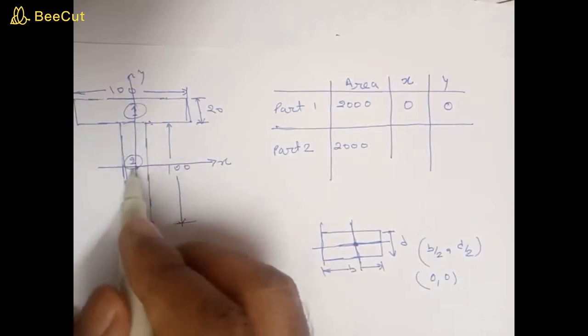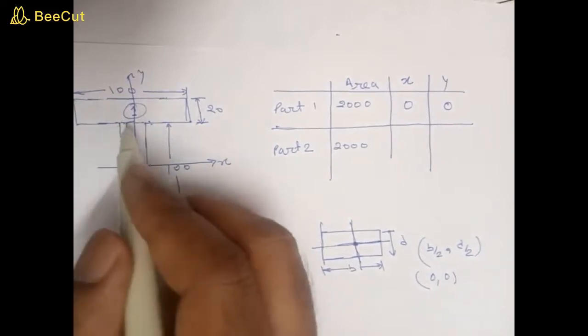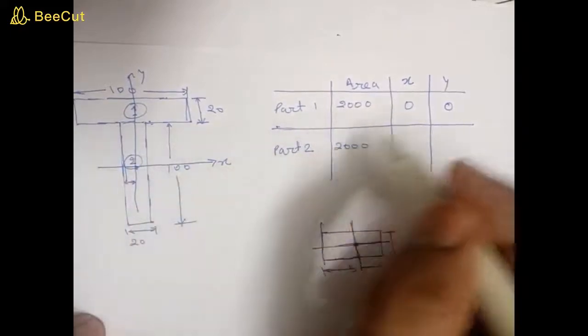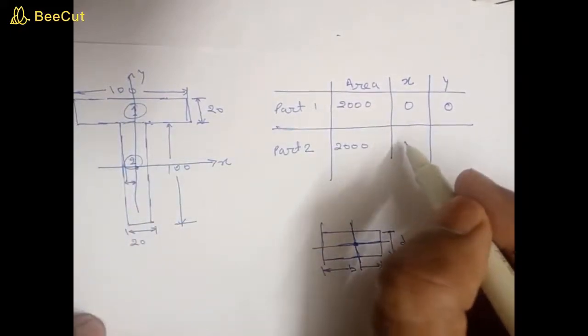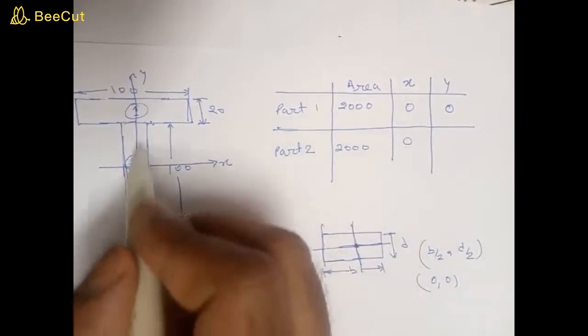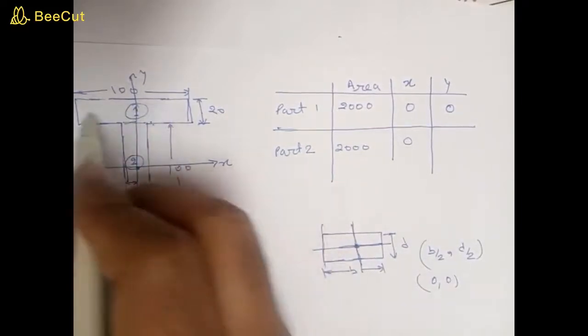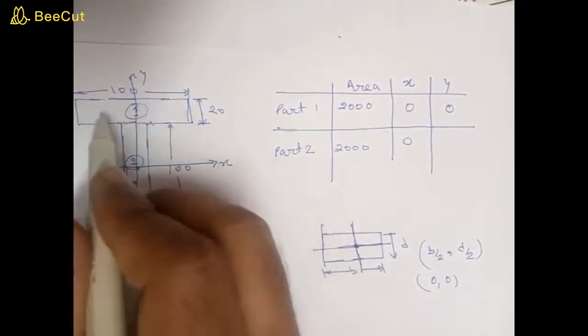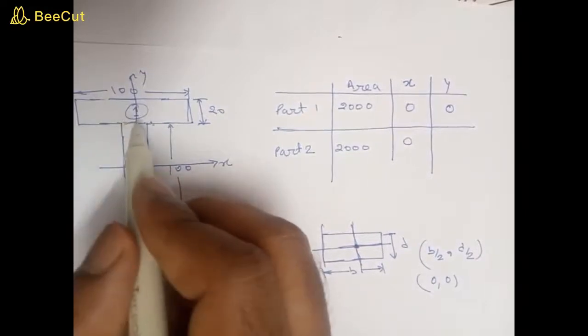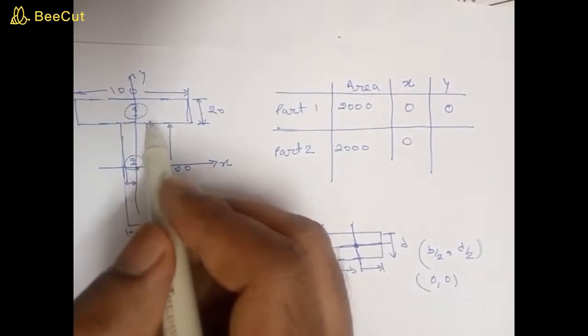For part two, the centroidal x-coordinate will be zero because this section is symmetrical about y-axis. Any shape which is symmetrical about y-axis, its x-coordinate will be zero.